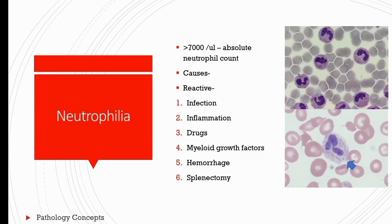Neutrophilia: when absolute neutrophil count is more than 7,000 per microliter, it is called neutrophilia. The reactive causes of neutrophilia are infections — mainly bacterial, viral, mycobacterial — inflammation, drugs like corticosteroids, myeloid growth factors like GM-CSF, hemorrhage, and splenectomy. In reactive conditions like infection, neutrophils show toxic granulation, Döhle bodies, and cytoplasmic vacuoles.